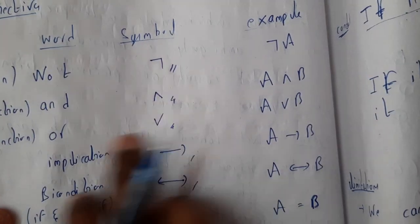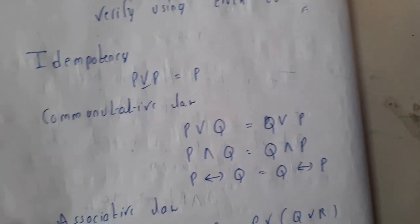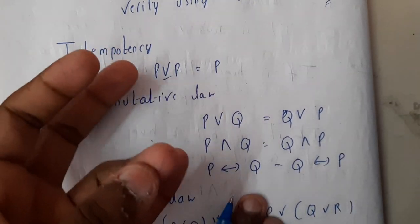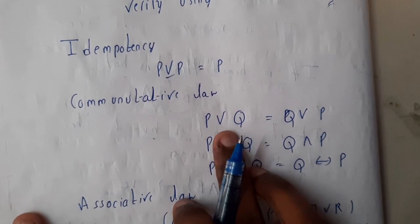Commutative law: I hope everyone knows commutative law, A plus B equals B plus A, like that. So P or Q is equals to Q or P.